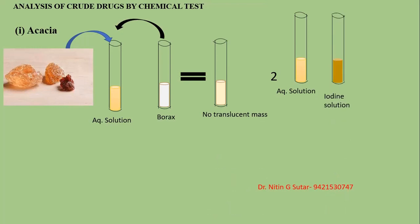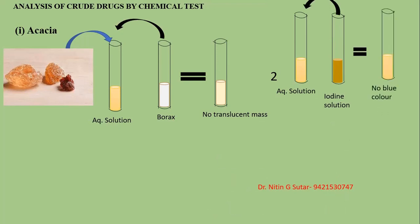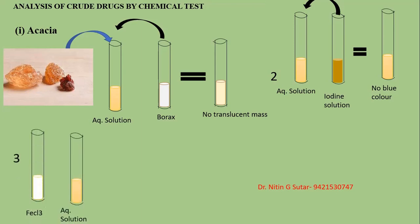When the aqueous solution of acacia is treated with iodine, there is no blue color formation, because starch grains are absent in acacia. Only starch is responsible for giving a blue color with iodine solution. For the next test, add ferric chloride to the aqueous solution of acacia — no bluish-black color is formed. That indicates acacia is present.